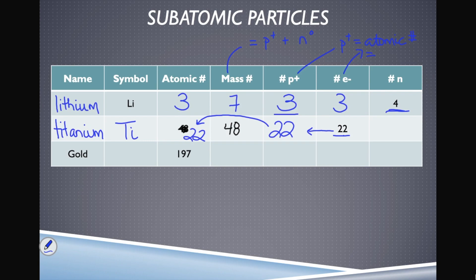Atomic number 22 on the periodic table turns out to be titanium. To find the number of neutrons: neutrons equals mass number minus number of protons, so 48 minus 22 equals 26 neutrons for an atom of titanium.